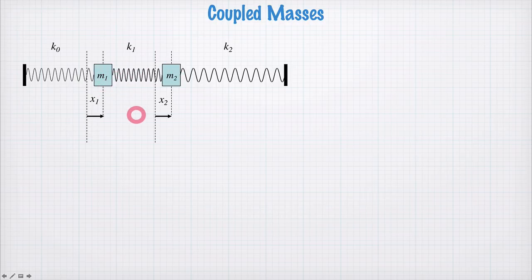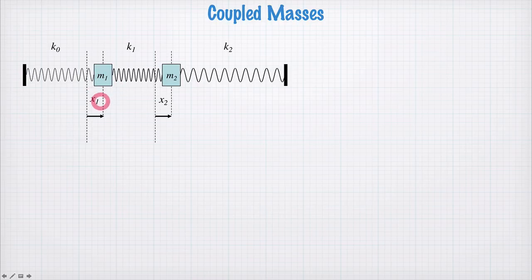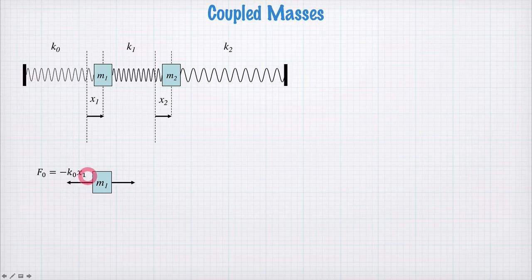Now we need to derive some equations of motion for the variables x1 and x2 to find out how these two masses work. Starting with mass m1, let's add up the forces. There's one force due to the spring with constant k0 — as treated before, from Hooke's law it's in the opposite direction to x1: negative k0 x1. The force due to the spring with constant k1 will be proportional to the difference between x1 and x2.